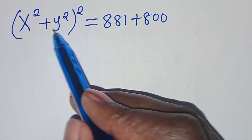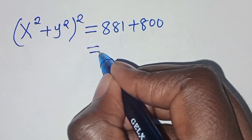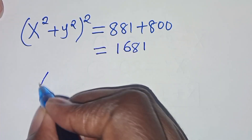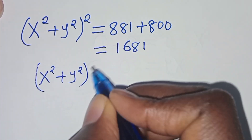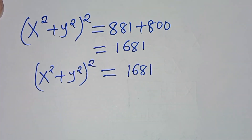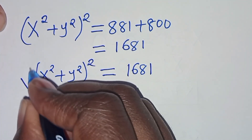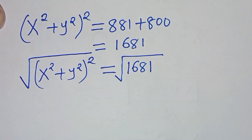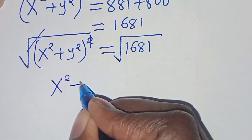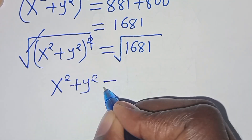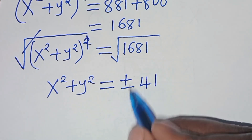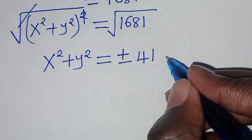So x squared plus y squared, raised to power 2, equals 881 plus 800, which equals 1681. To solve for x squared plus y squared, we take the square root of both sides, giving x squared plus y squared equals plus or minus the square root of 1681, which is plus or minus 41. Let's call this equation 4.